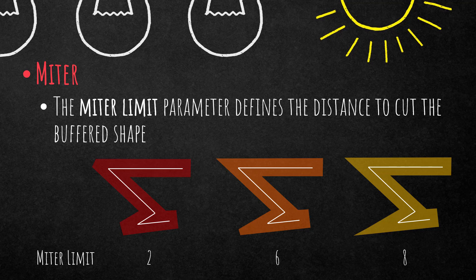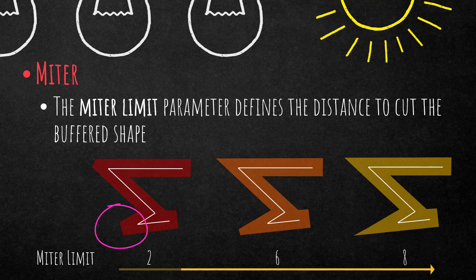Looking at the figures, we increase the miter limit from left to right from two to eight. You can see that if you set the miter limit to two, it cuts off the buffer at the bottom. If you set it to eight, it doesn't cut the corner. A miter limit of two means it cuts off all points further than two times the buffer distance — so if the buffer distance is ten meters, that's twenty meters. Increasing to eight means eighty meters.